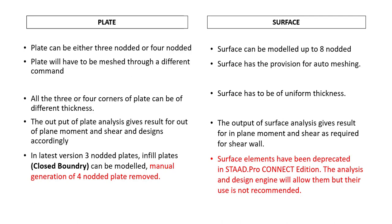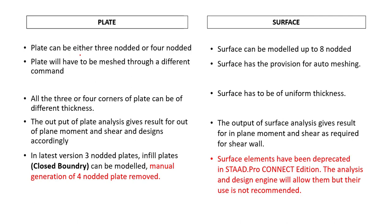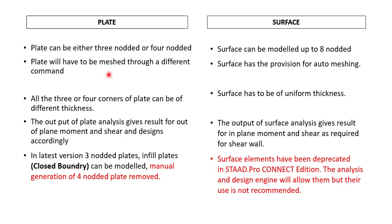In our Connect Edition version, we will not be able to model a shear wall or stair element in terms of surface. Now for the key differences: a plate element can be 3-noded or 4-noded, whereas a surface can be modeled up to 8 nodes. For plate, meshing has to be done through a different command, while for surface there is provision for automation. Also, a plate can have different thickness at its 3 or 4 corners, while a surface must have uniform thickness.